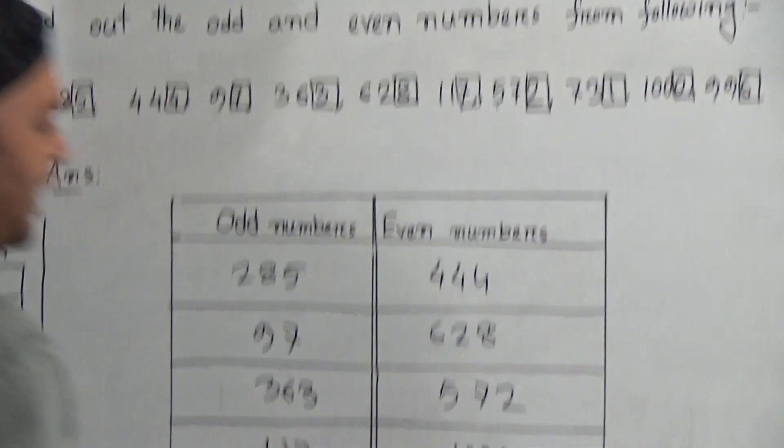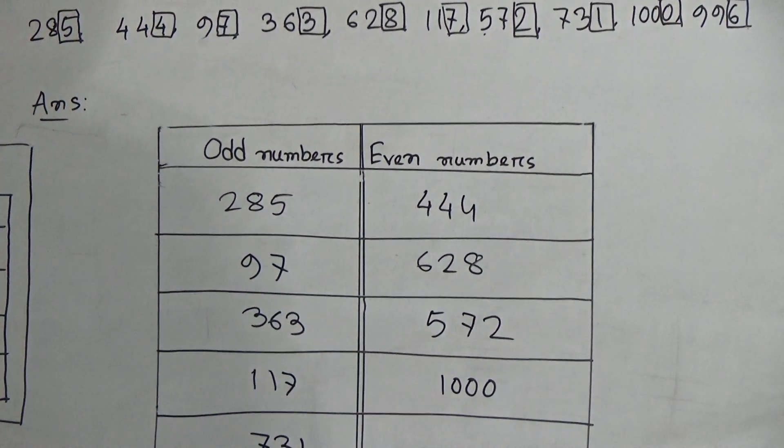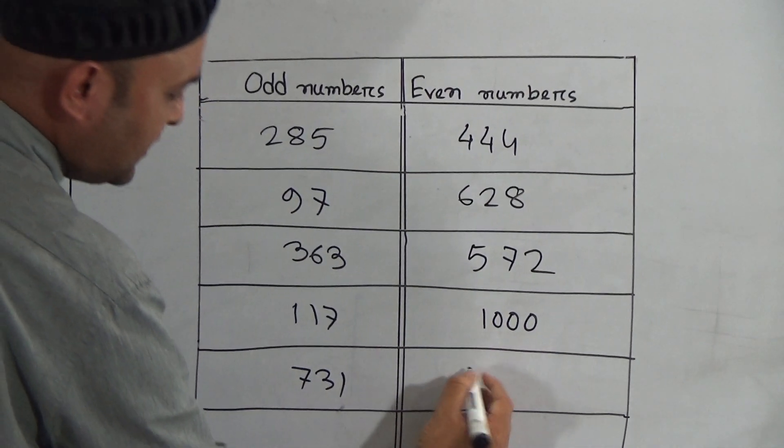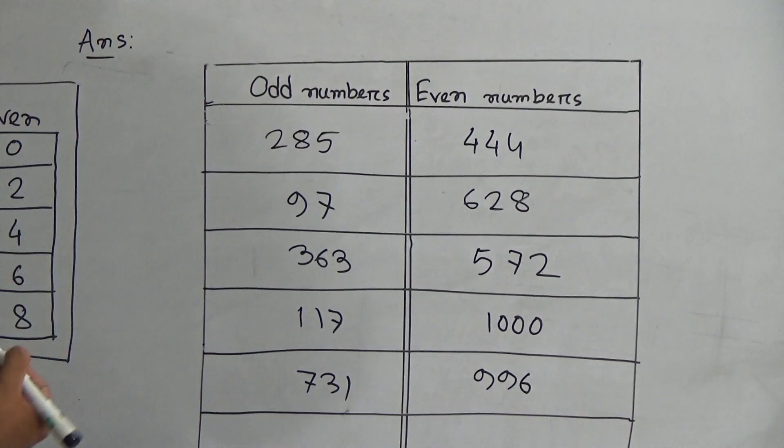996. 6 is the last digit of this number. So 6 is the symbol of an even number. Therefore, 996 is an even number.